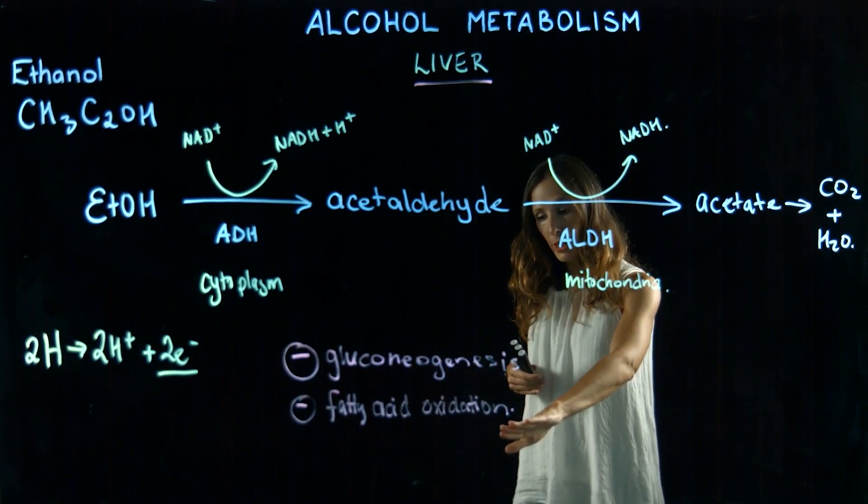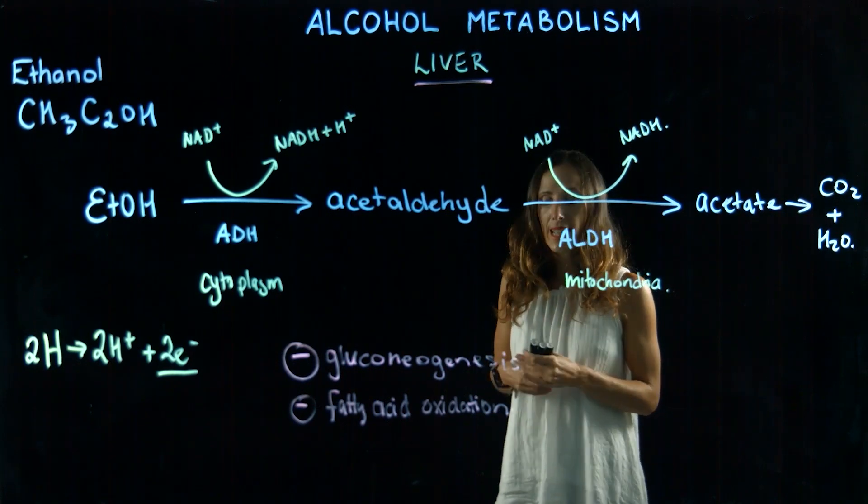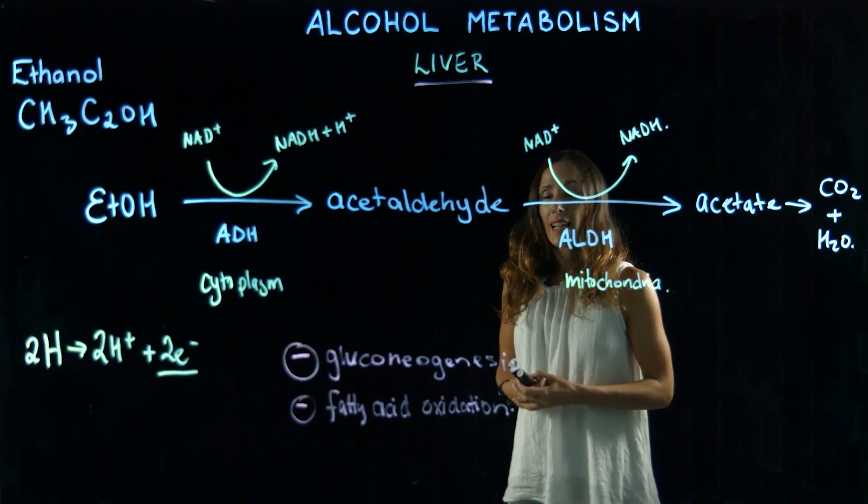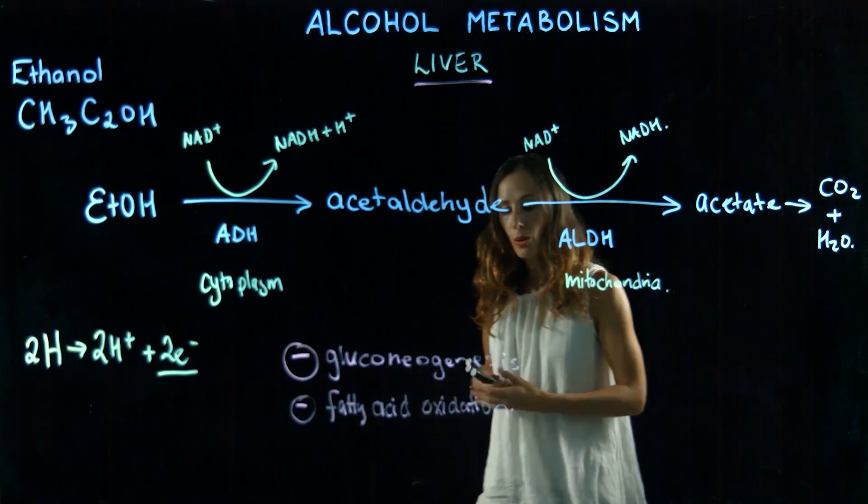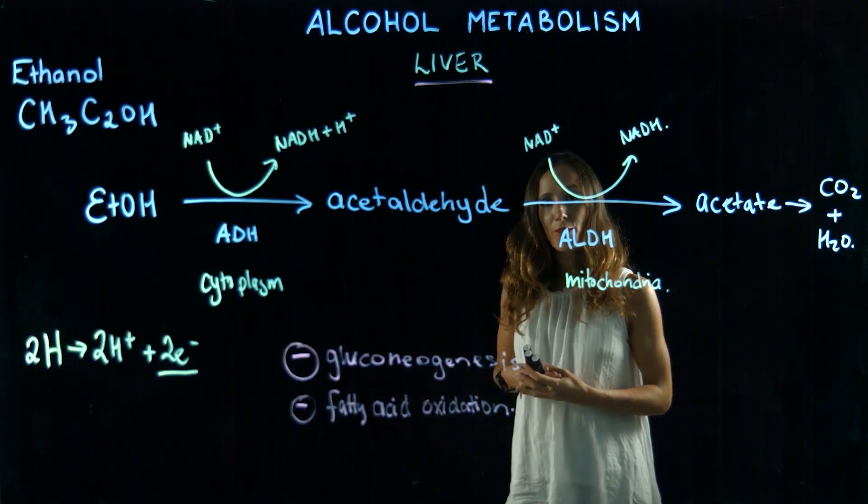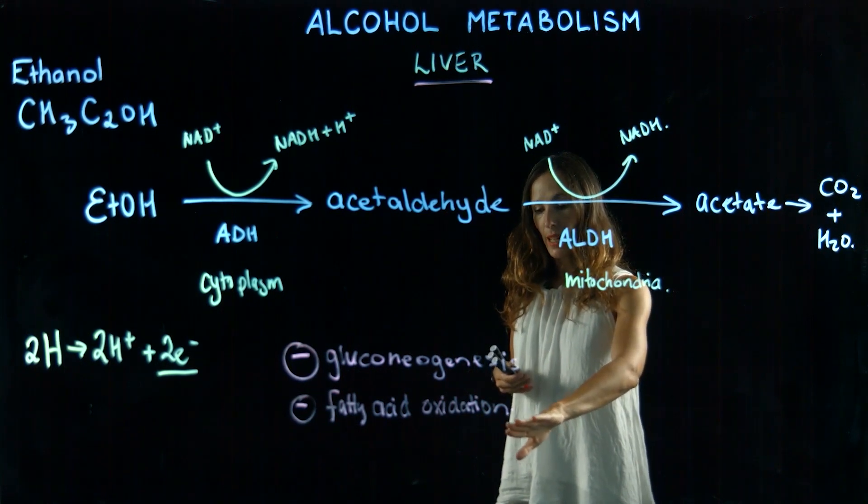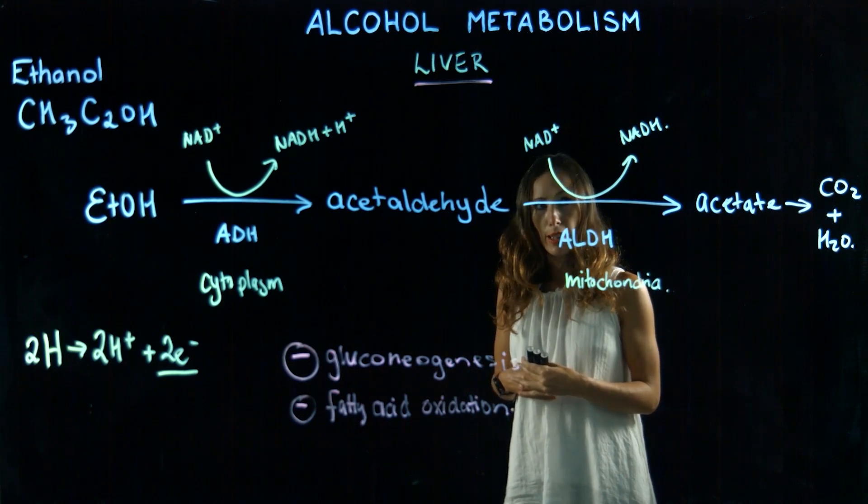Fatty acid oxidation is being inhibited, and that means we're promoting fatty acid synthesis. If someone is eating high-fat foods while drinking or consuming alcohol, we have a buildup or an accumulation of triacylglycerides in the liver that can lead to fatty liver because of the increase in fatty acids and TAGs.